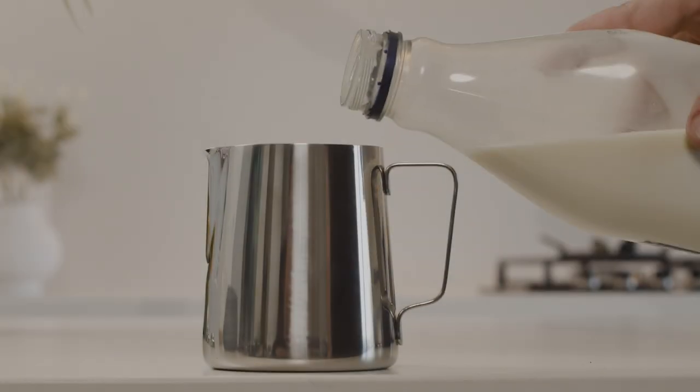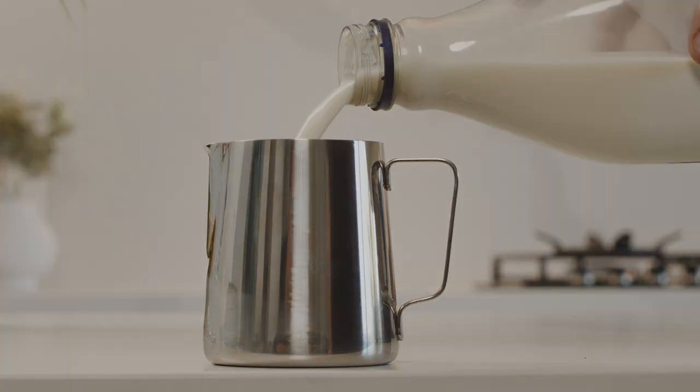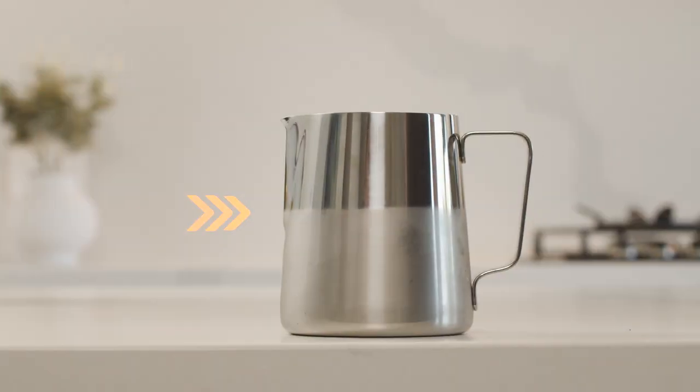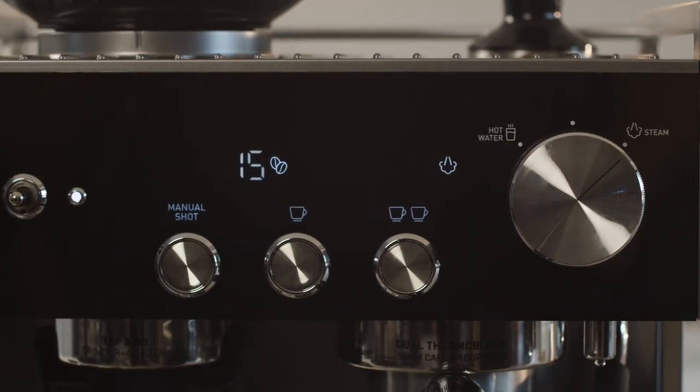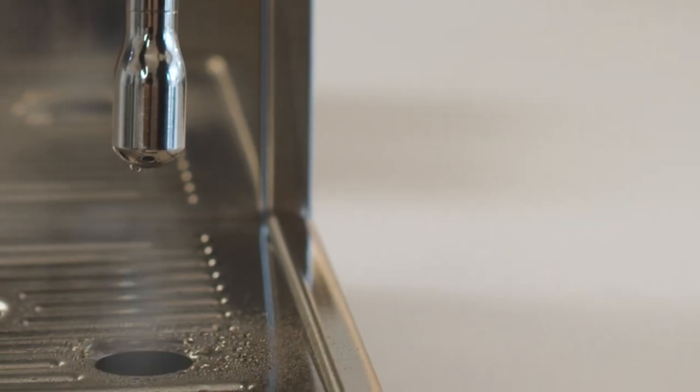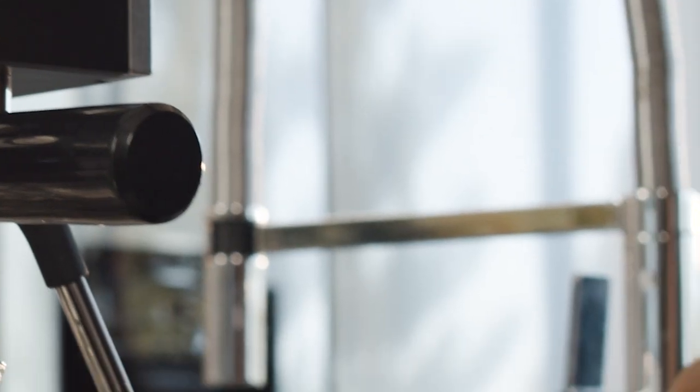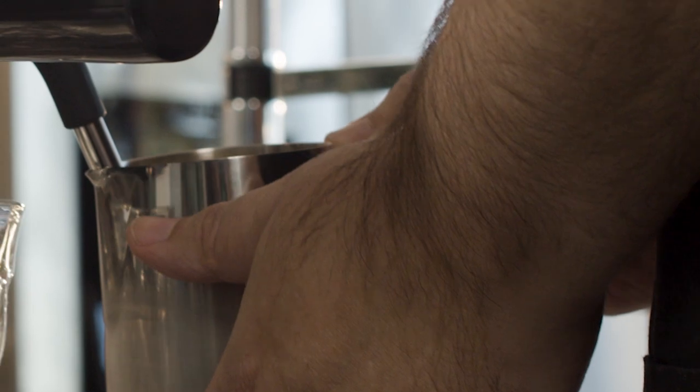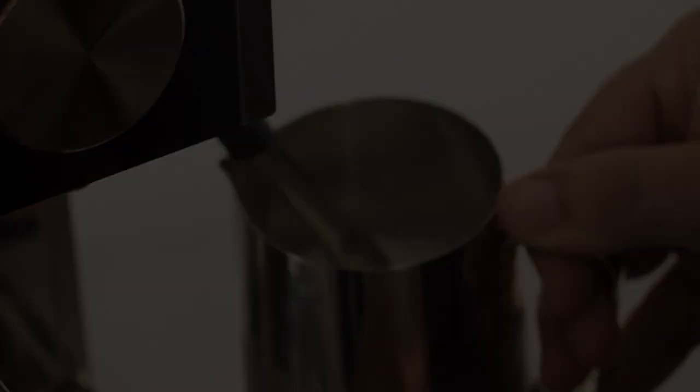To create the perfect cafe quality milk, start by filling the milk jug up to or close to the bottom of the spout with cold milk. You're now ready to rotate the steam dial to the steam position. When the steam pressure is at its peak, turn the steam off and insert the wand into the milk jug. When you're ready, turn the steam dial back to the steam position and start texturing the milk.